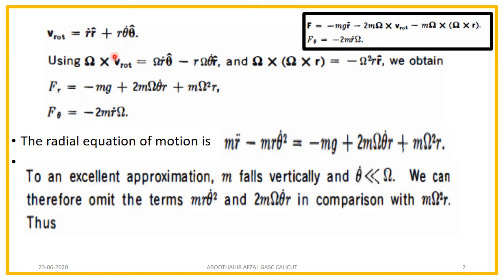Now, as we know the value of v_rot, omega cross v_rot will be computed by multiplying omega with this expression. So omega cross r-dot gives omega times r-dot. But if I take the cross product of omega-cap and r-cap, I get theta-cap. The second term: multiplying omega with r times theta-dot times theta-cap gives omega cross r times theta-dot times theta-cap.